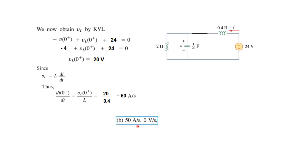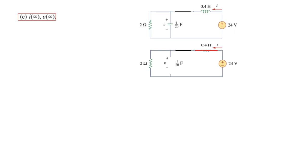For the third part, i(∞) and v(∞): at t infinity the inductor is short circuit and the capacitor is open. The current i(∞) = 24 divided by 2 ohms = 12 amperes. The voltage v(∞) = 12 amperes multiplied by 2 ohms = 24 volts. This completes both examples — I hope this gives you an understanding of how to solve initial and final value problems. Thank you.